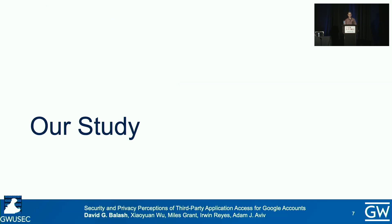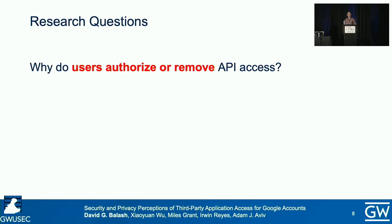Our study explores how users consider the security and privacy of third-party API access to their Google accounts, given the disclosure and control mechanisms currently available. With that in mind, we set up three research questions. First, we wanted to find out why users authorize or remove API access, and this includes measuring users' existing SSO and third-party app use.